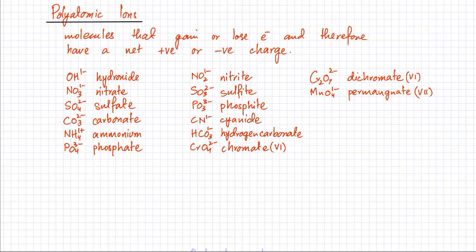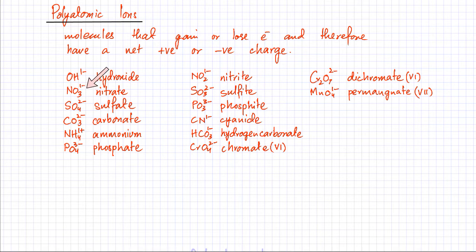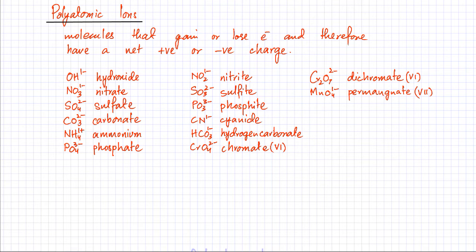One important thing about polyatomic ions is that you have to remember the entire list — both the formula and the name. The first is the hydroxide ion: OH with a net charge of 1−. The minus one charge is on the entire OH molecule, not just the hydrogen. The second is nitrate: NO₃ 1−. Then sulfate: SO₄ 2−. Carbonate: CO₃ 2−. Ammonium: NH₄ with a charge of 1+. And phosphate: PO₄ with a net negative charge of minus three.